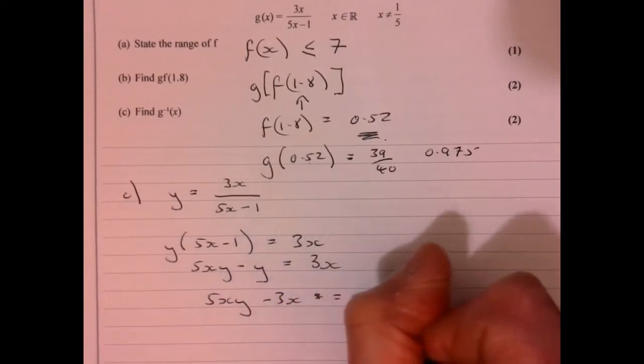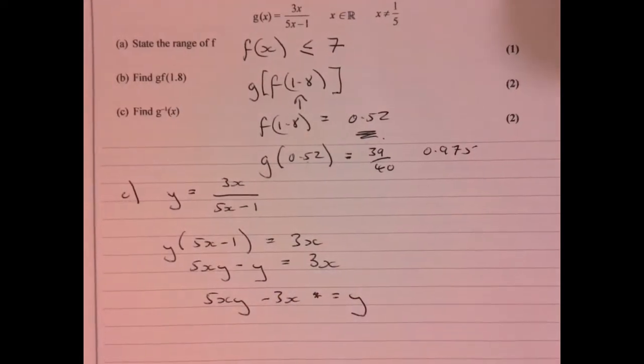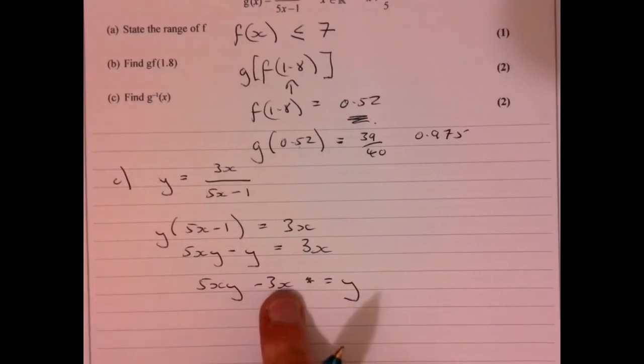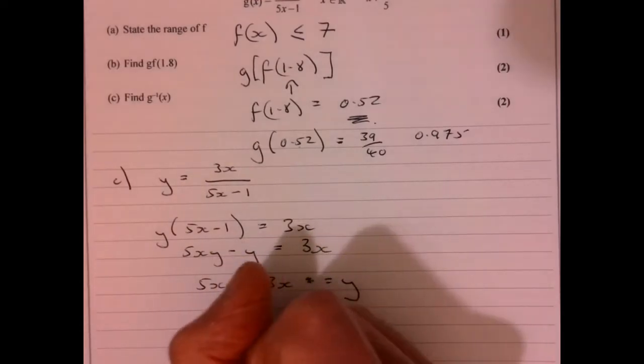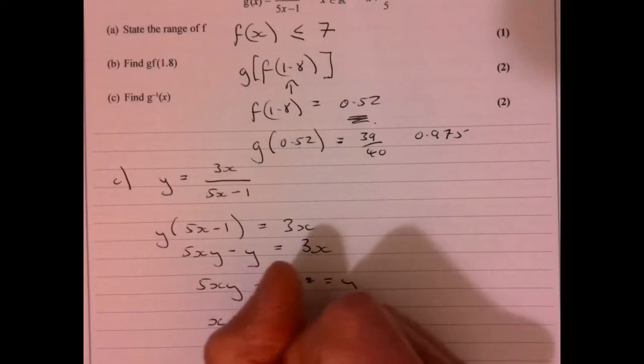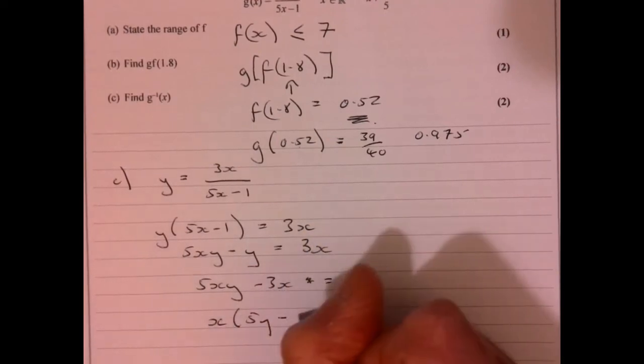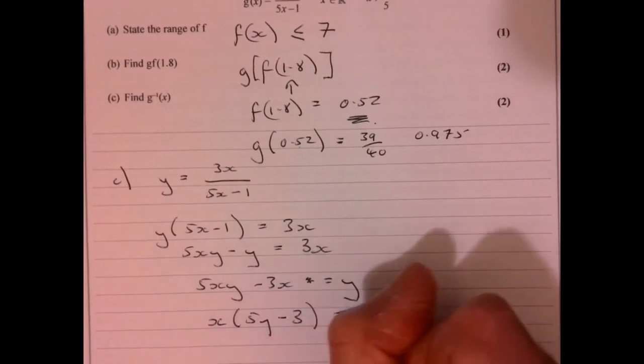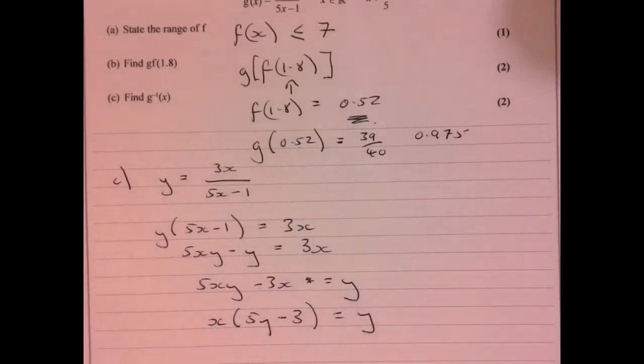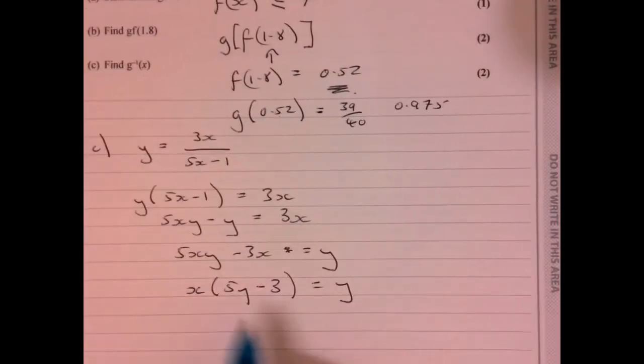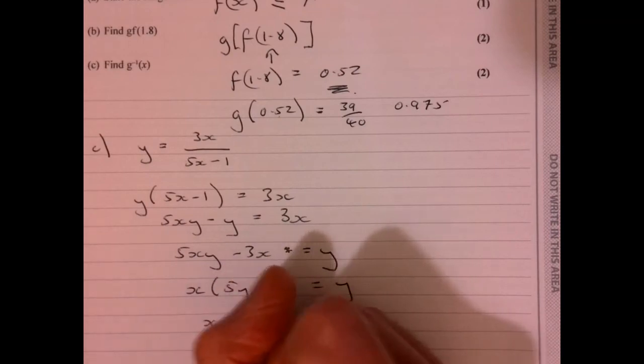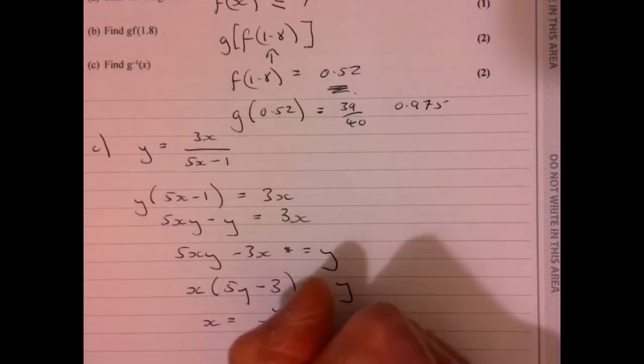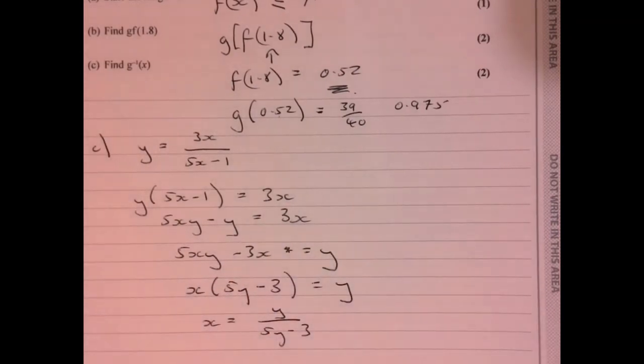That equals y. Now take x out as a common factor, because remember you're trying to get x equals. So that would give me x times (5y minus 3) equals y. Because I want to just have one x written down once. Divide by 5y minus 3, so x equals y over (5y minus 3).